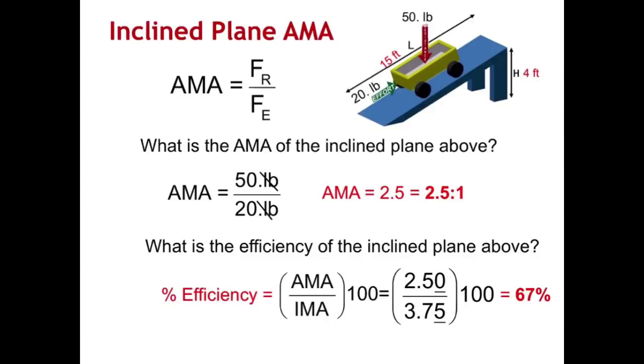So now I can figure out the efficiency of this inclined plane. So this is what is the efficiency of the inclined plane above. So I'm going to plug this in, my AMA divided by my IMA times 100 is going to give me my percent efficiency. So 2.50 divided by 3.75. Remember I got this 3.75 from the slide before when I found IMA. Times 100 gives me 67%.